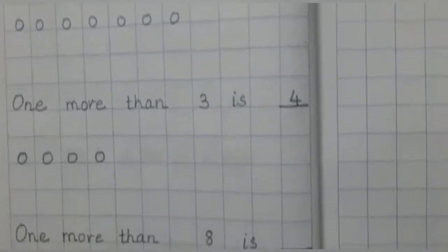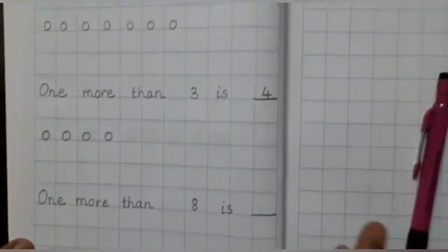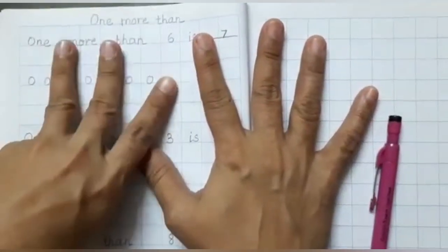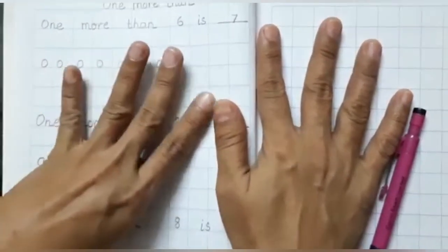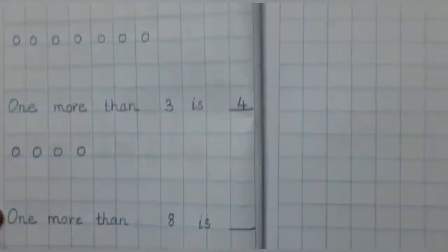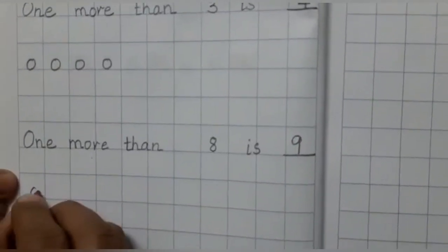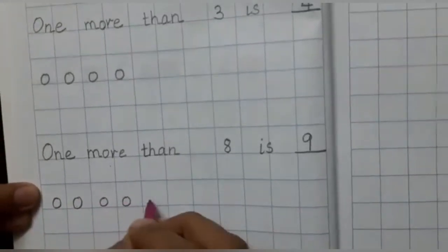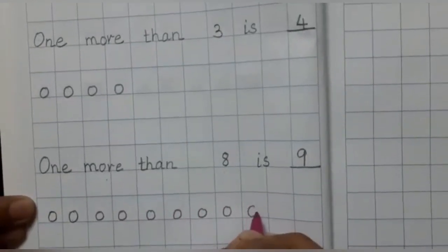One more than eight. Now tell me children, what is one more than eight? Let's count fingers: five fingers, six, seven and eight. So one more than eight — let's open one more finger — and it is number nine. So one more than eight is nine. And let's draw how many balls? Yes, nine balls: one, two, three, four, five, six, seven, eight and nine balls.